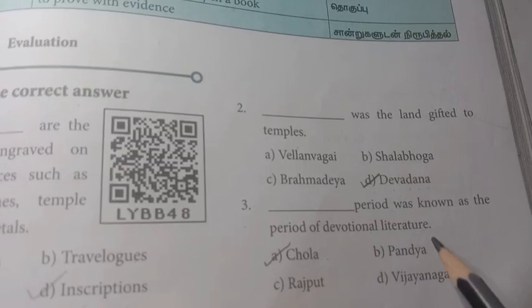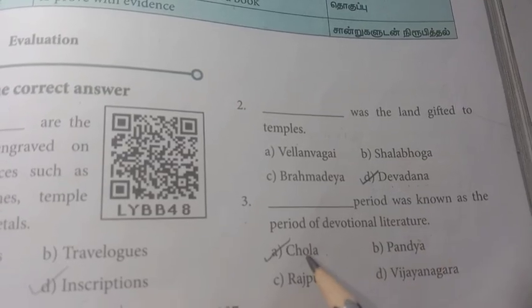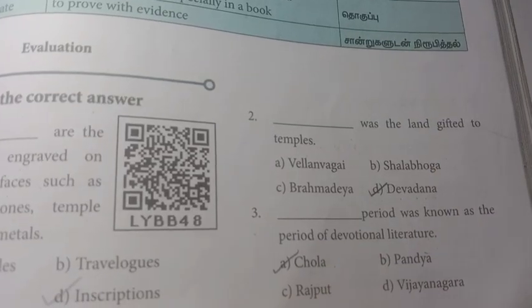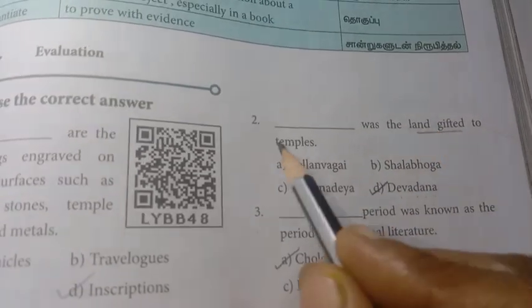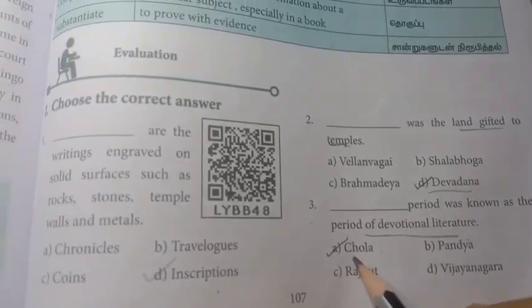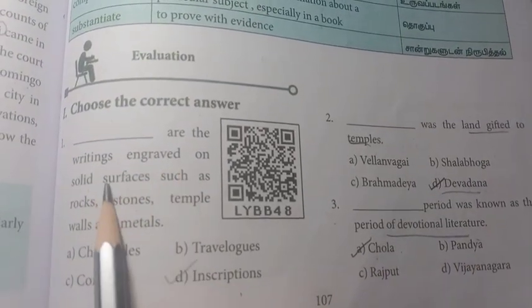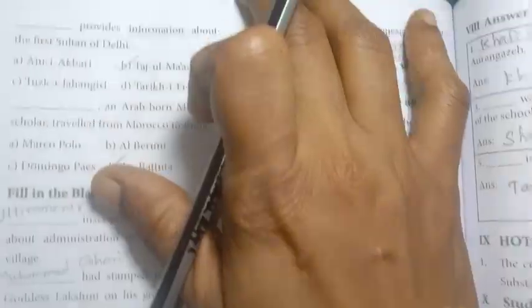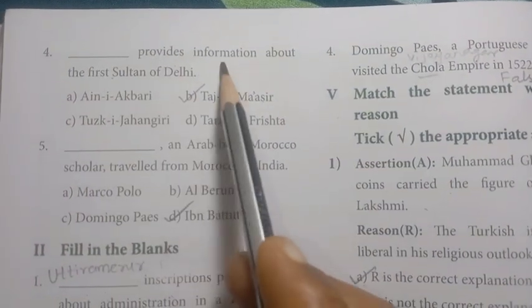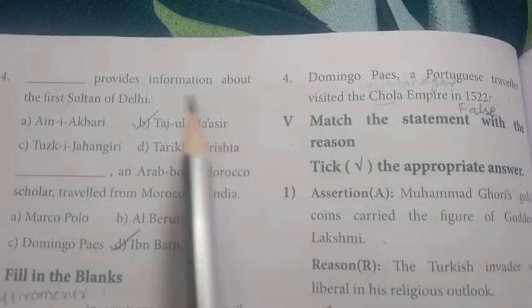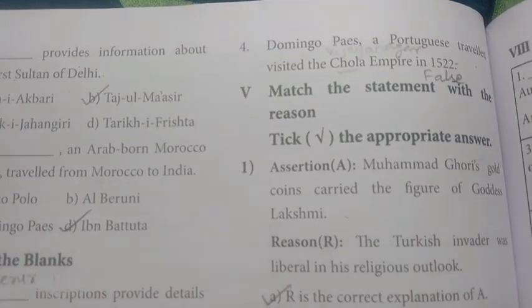Dash period was known as the period of devotional literature. What is the period of devotional literature? The key point provides information about the first Sultan of Delhi.